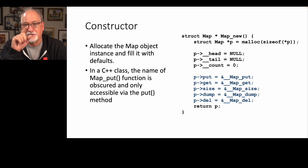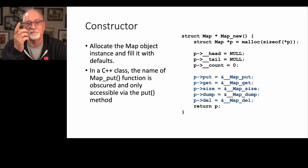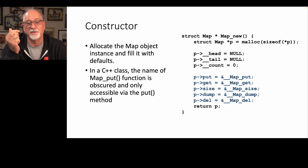Head is a 64-bit pointer, tail is a 64-bit pointer, count is probably a 64-bit or 32-bit integer. Put, get, size, dump, and del are all 64-bit. So the size of the map structure itself is about 10 words or less, which has to do with efficiency. And you probably already have most of the code you need for map put, map get, map size, map dump, and map del.